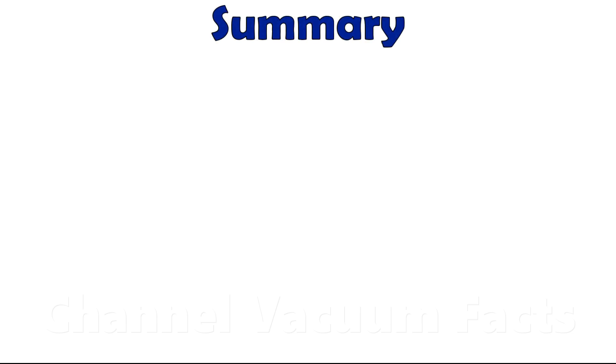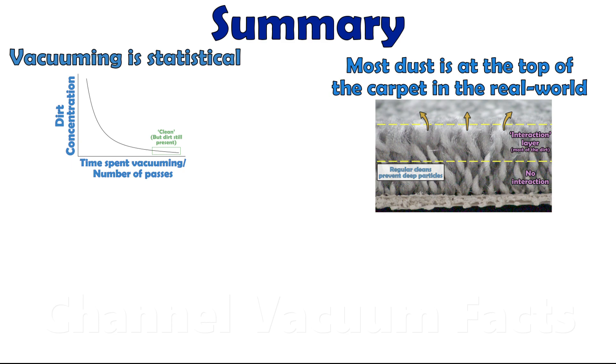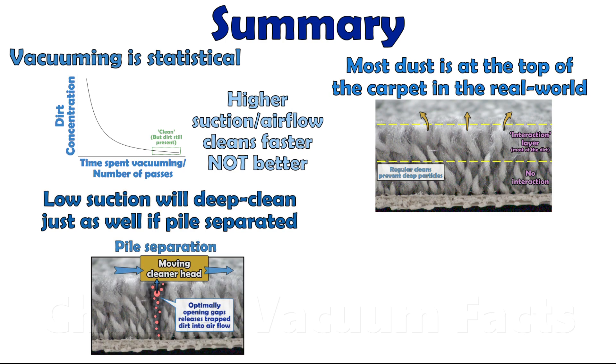The really important takeaway messages in this video are that vacuuming particles out of a carpet is a stochastic process. Most dust accumulates at the top of the carpet in real world conditions and is hard to get to the base of deeper piles. Higher suction cleans faster, not better, and only good cleaner head design can reduce dust concentrations to the lowest levels. Low suction will deep clean just as well if the cleaner head separates the pile to allow airflow deep down.